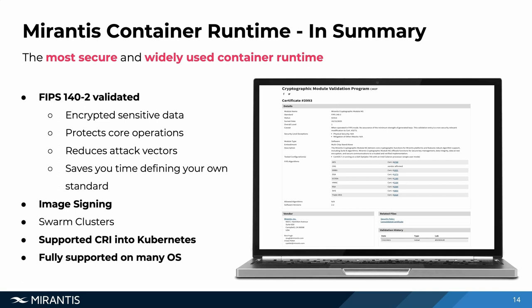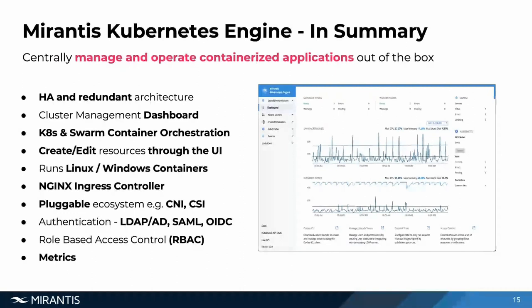CRI Docker D also provides CRI support into Kubernetes because CRI Docker D is already built into MCR — it's a simple configuration change within your Kubernetes cluster to get up and running right away. It's fully supported on both Linux, secured Red Hat, and Windows environments. And with the Kubernetes engine, you don't even need to do the configuration — everything is already built in. The Mirantis Kubernetes engine helps with management of the platform but also the deployed resources through a central user interface.